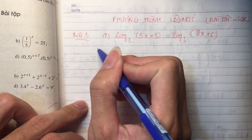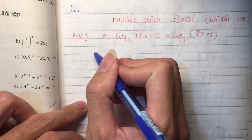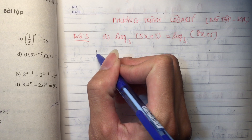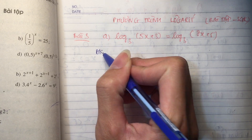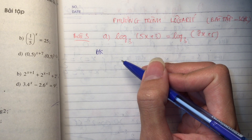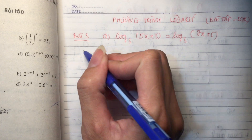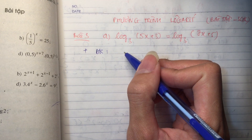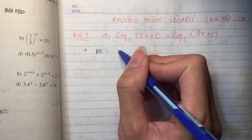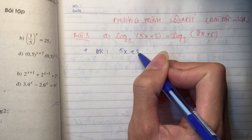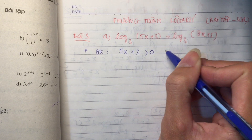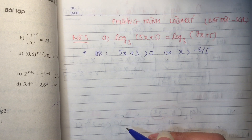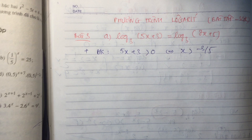Đặt điều kiện. Em có thể ghi rõ chữ điều kiện ra hoặc là em có thể giải theo kiểu tương đương cũng được. Thực ra viết thế nào cũng được. Bạn nào muốn viết riêng điều kiện ra để tránh phải viết lại nhiều thì em ghi điều kiện là 1 trong 2 cái này dương, em đặt cái nào dương cũng được. Ví dụ chúng ta đặt 5x cộng 3 dương, tương đương x lớn hơn âm 3 phần 5.